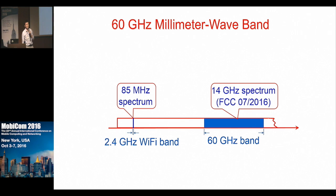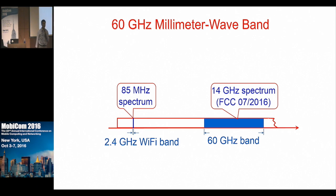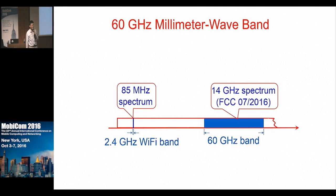The 60 gigahertz spectrum band is getting a lot of attention recently. We used to talk a lot about spectrum scarcity on the microwave band where Wi-Fi and LTE are located, but on the 60 gigahertz band, the problem is almost gone, especially after FCC's recent regulation update, which released about 14 gigahertz of spectrum for unlicensed use. This creates a huge playground for wireless research.